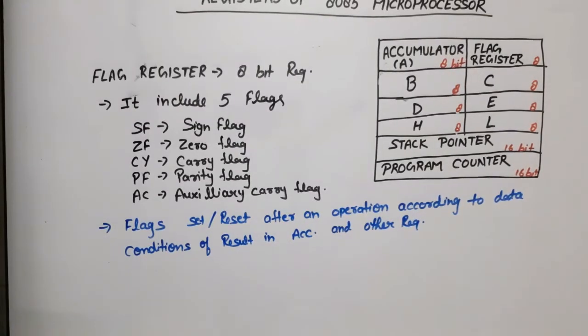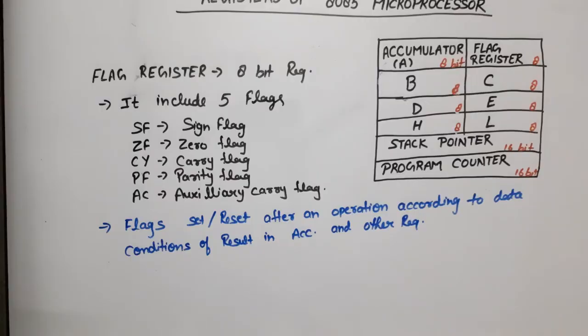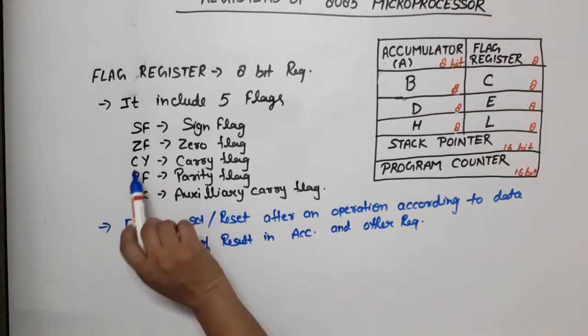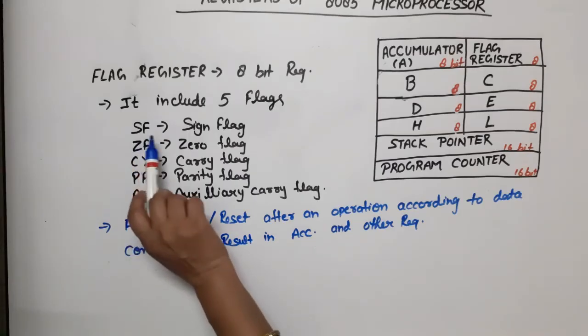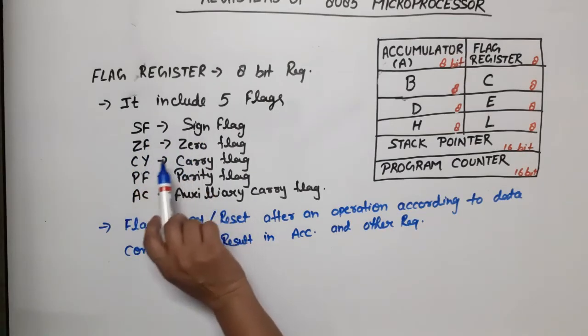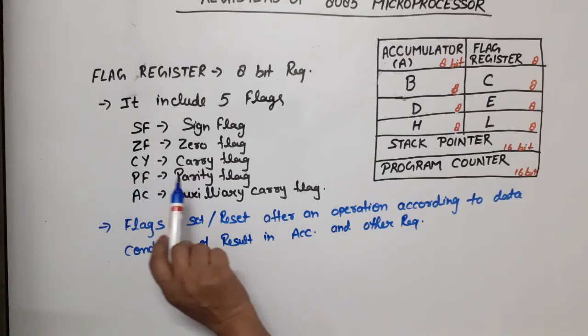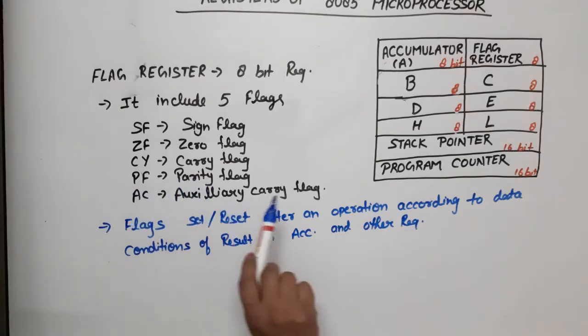Now, the flag register is also an 8-bit register, but it includes only 5 flags: SF is the sign flag, ZF is the zero flag, CY is the carry flag, PF is the parity flag, and AC is the auxiliary carry flag.